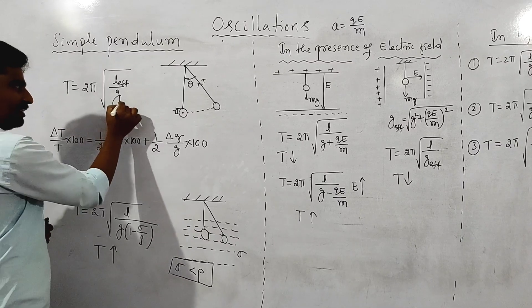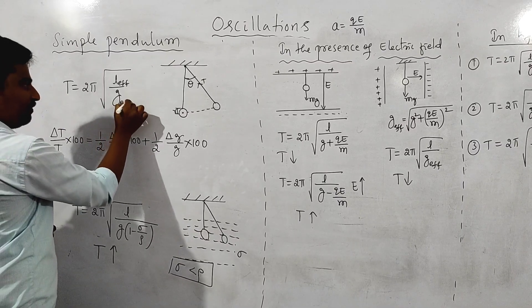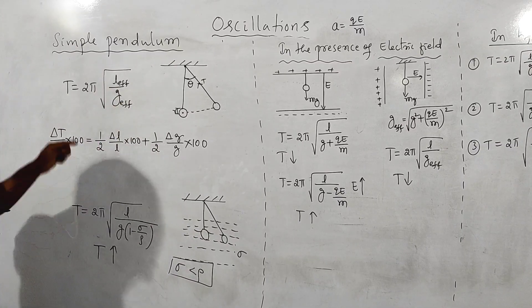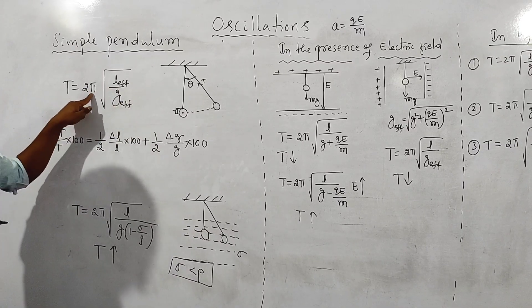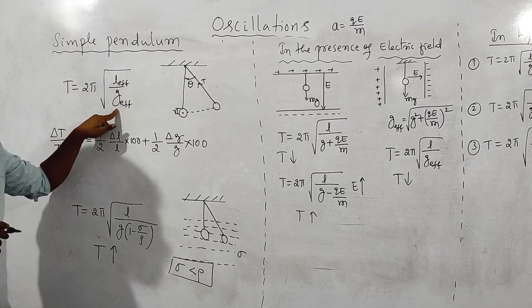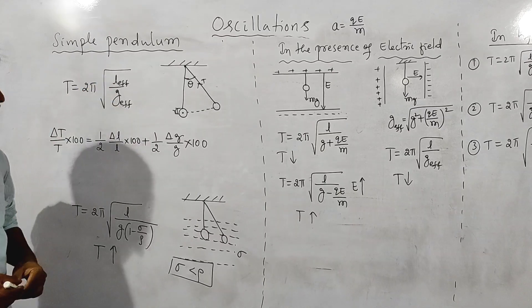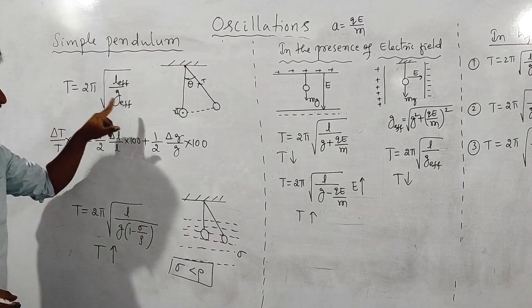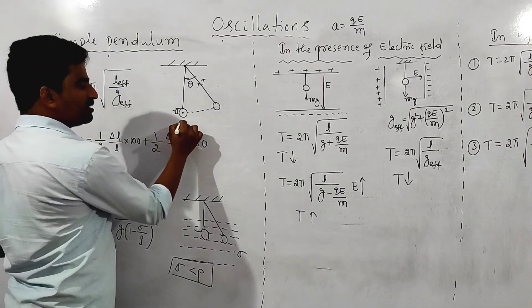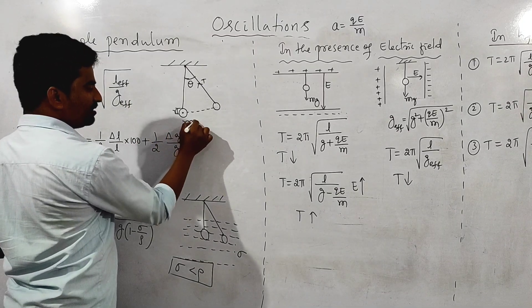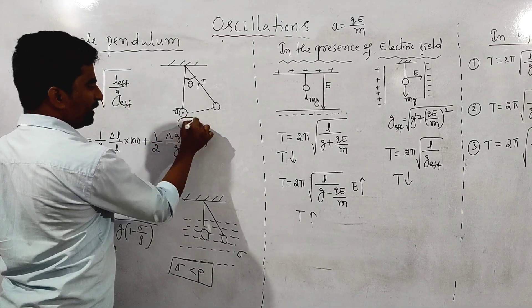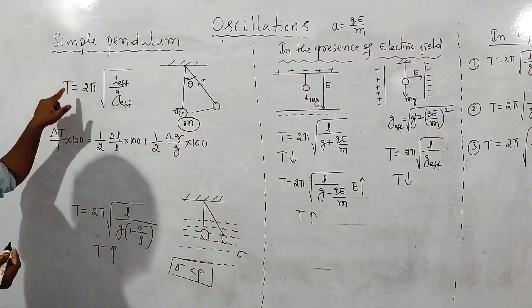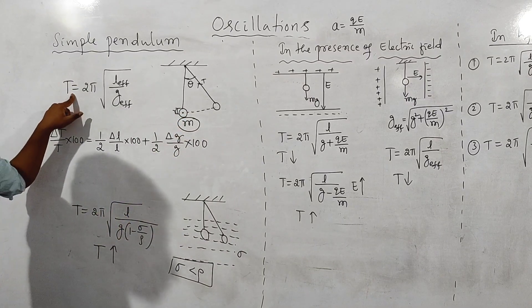That is the length used in the time period formula. The general formula is T = 2π√(L/G). Time period does not depend upon the mass of the bob — the mass of the bob does not affect the time period.